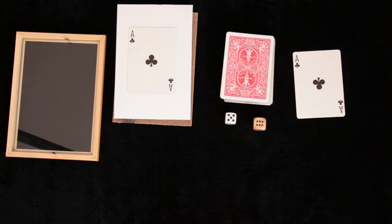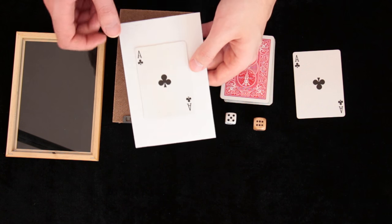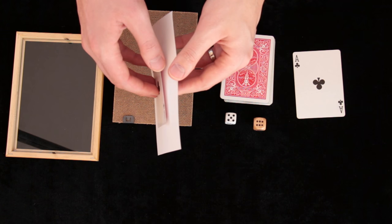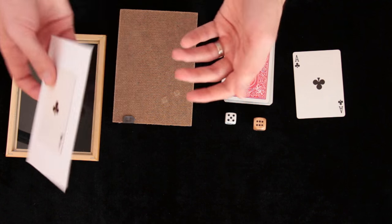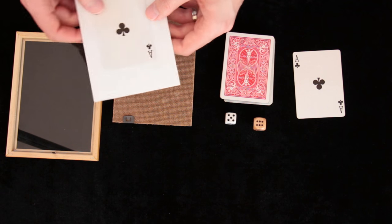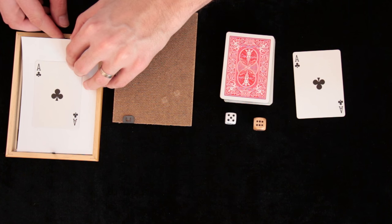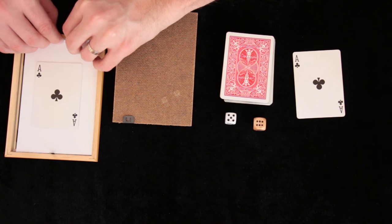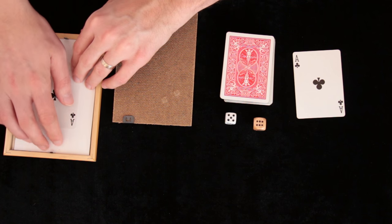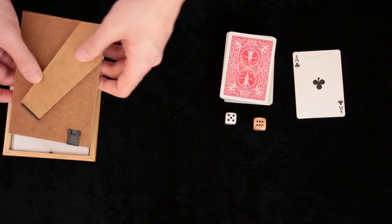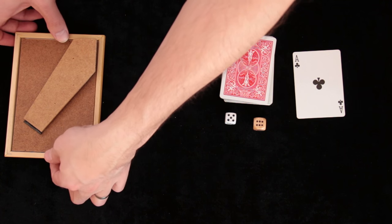So this was the easy way how to force a card to the spectator, now we will get back to trick itself. Take your duplicate card and place it on a piece of paper, use either glue or double sided tape. Place it inside the picture frame, we have glass in there already and you will place it of course in a way that it is not visible from the front that we have a card inside.